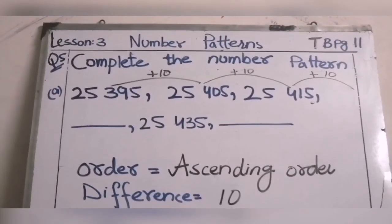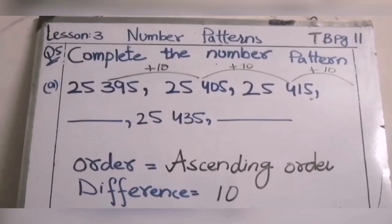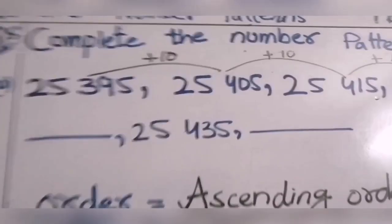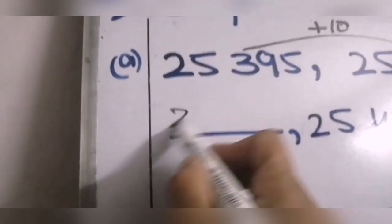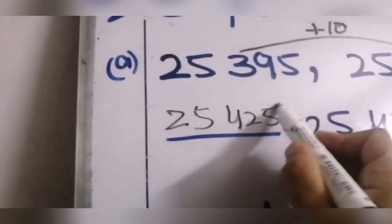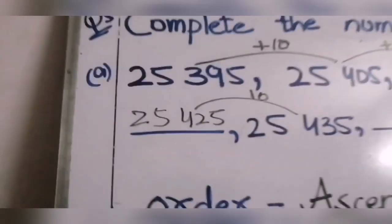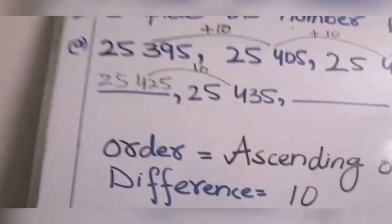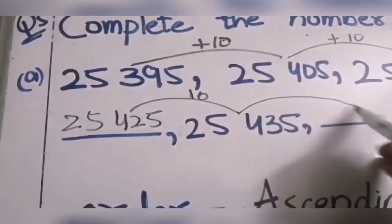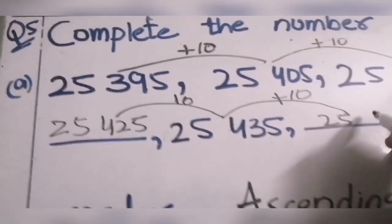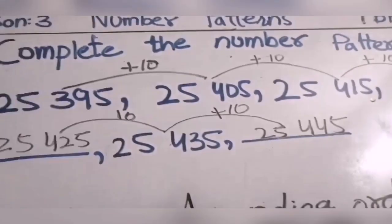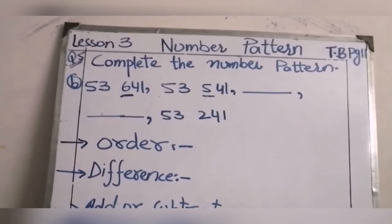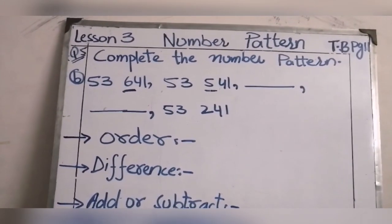When we add 10 to 25,415 it becomes 25,425. Further, when we add 10 it becomes 25,435, and last of all when we add 10 it becomes 25,445. Here we have another example: 53,641, 53,541 — what comes next?